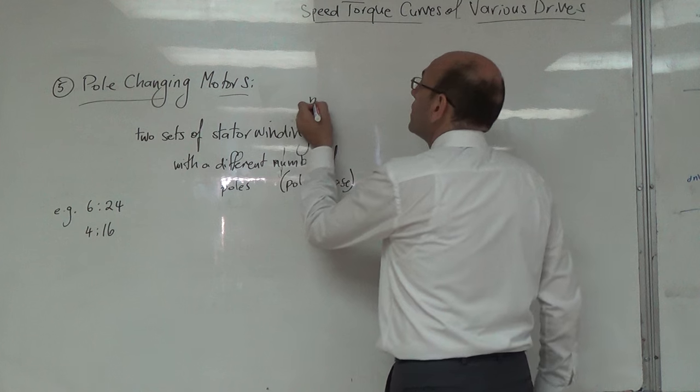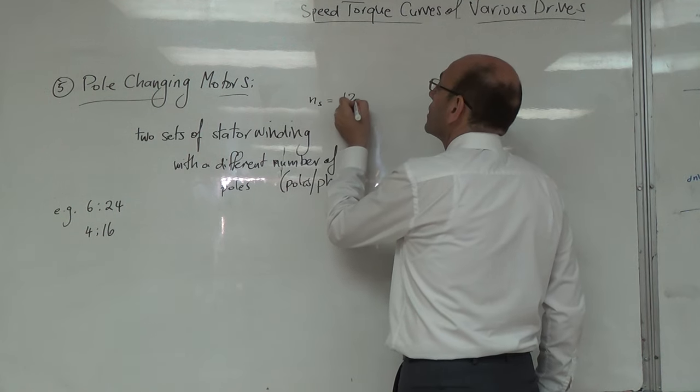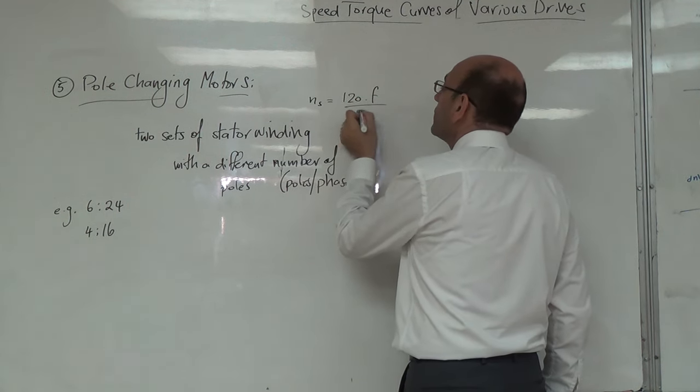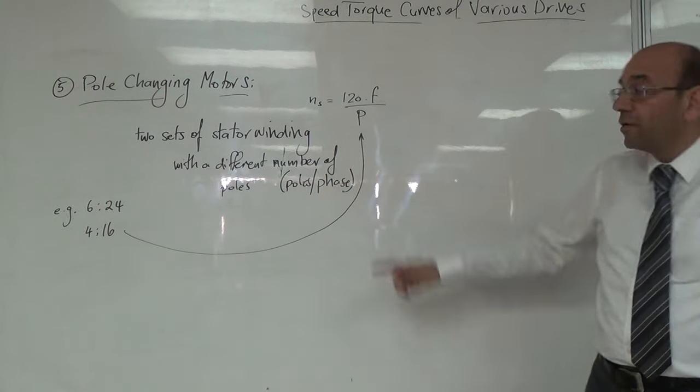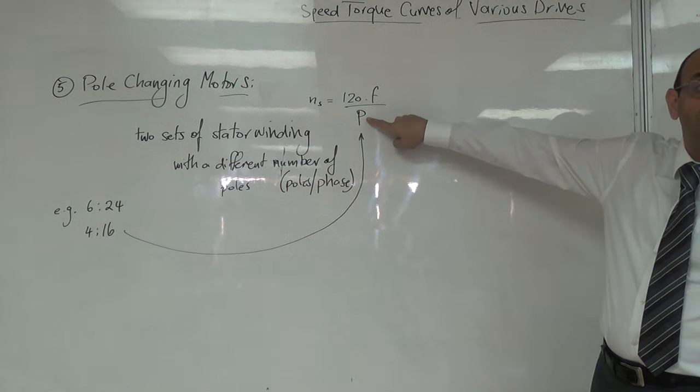اتطلعنا على ns تساوي 120 في f على P. فقدرنا نغير الـ synchronous speed بتغيير عدد الـ poles.